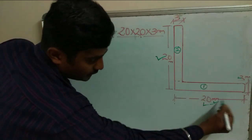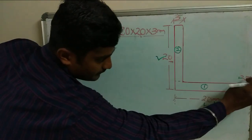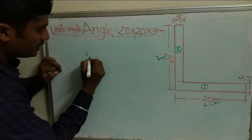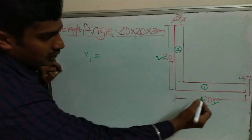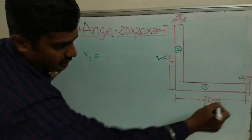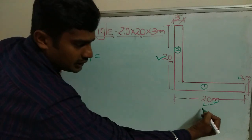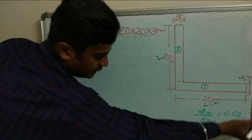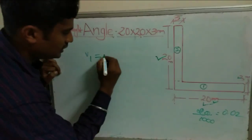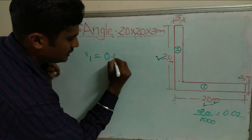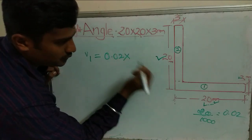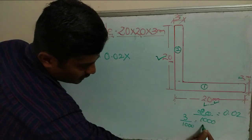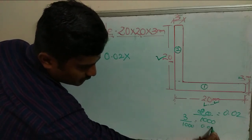So, 20 mm height and 3 mm thickness over 1 meter length. Volume 1 equals — in meters, 20 divided by 1000 gives 0.02 m. The thickness is 3 mm, which is 3 divided by 1000, equal to 0.003 m.